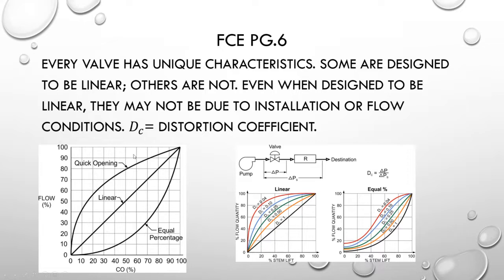The first section we'll talk about in terms of how to fix a non-linear control loop usually deals with selecting a proper valve. In a perfect world with a linear process, we can use a linear valve. But if it's not — as we've discussed, it's probably the case — we can use a different type of valve trim to try to fix the linearity issues.